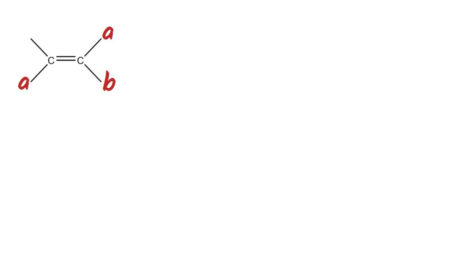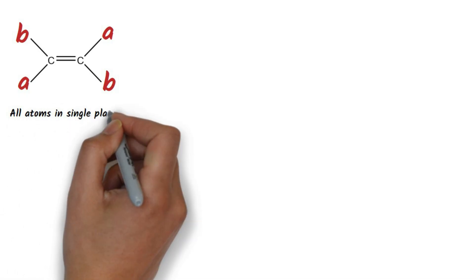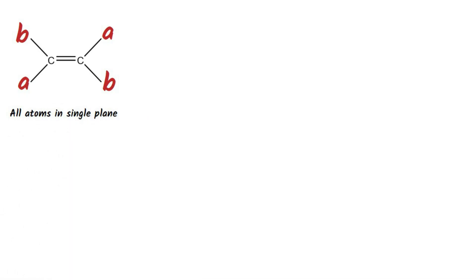To understand axial chirality in allenes, first consider this alkene whose terminal carbons have different substituents. The two carbons connected with the double bond and the substituents attached are in a single plane. Therefore such molecules show geometrical isomerism. Similar substituents pointing opposite across the double bond makes the isomer trans.